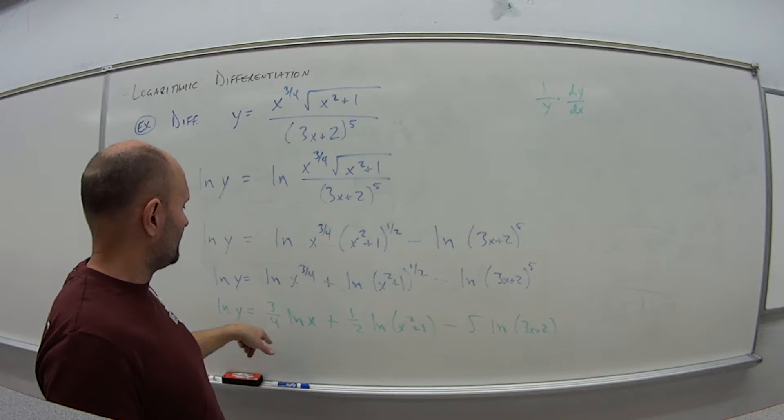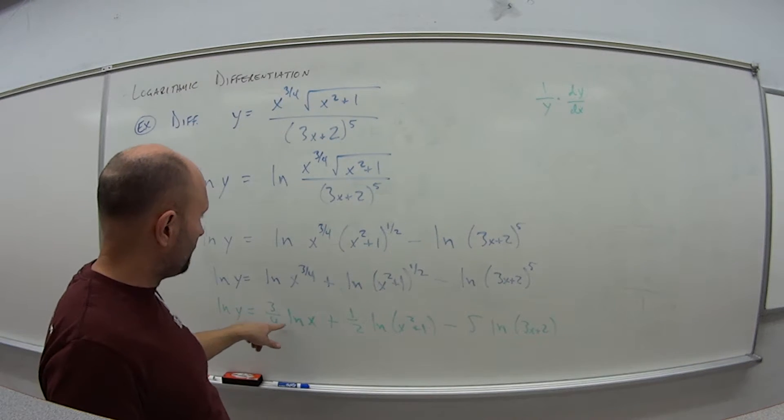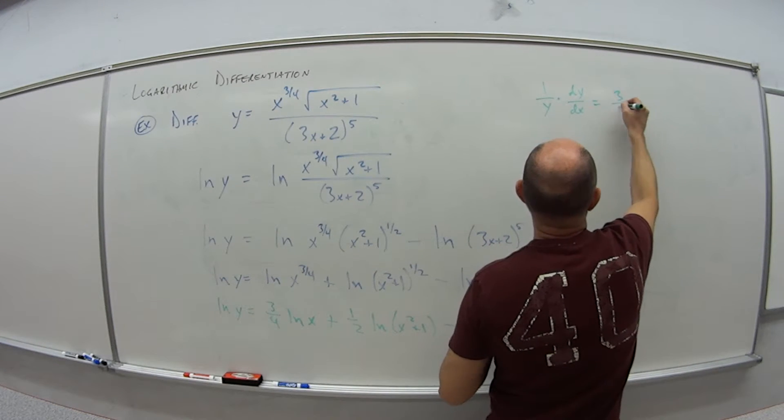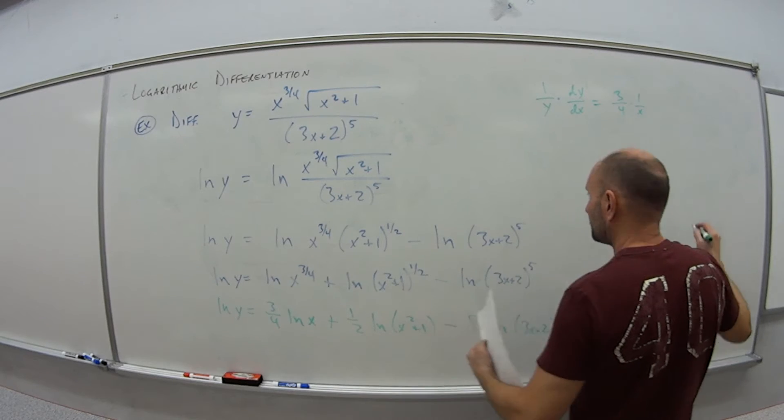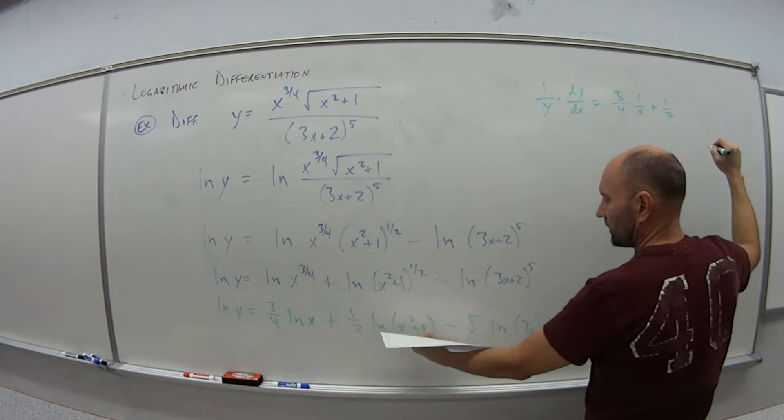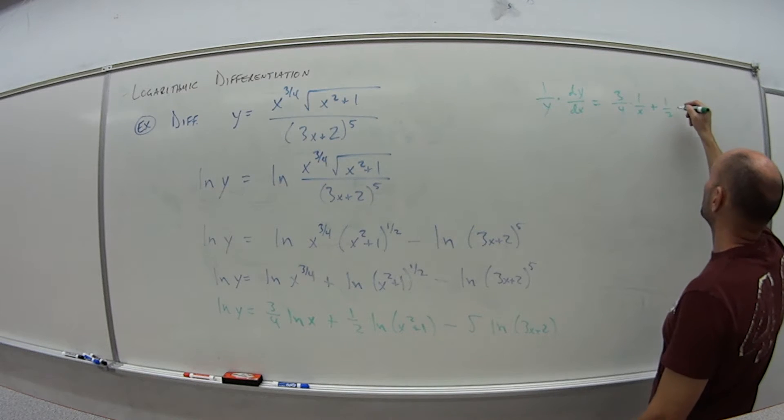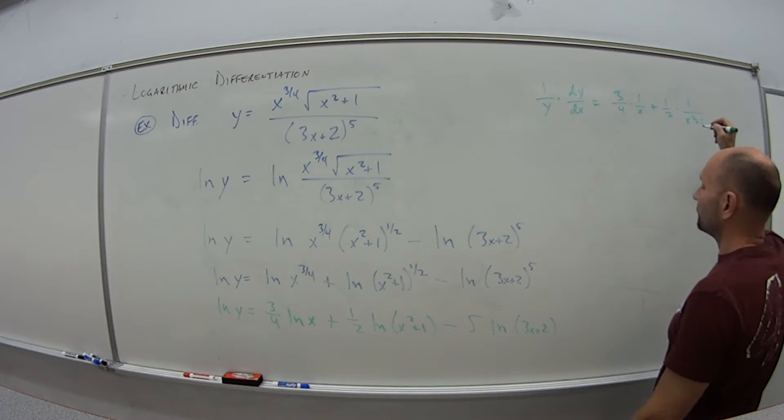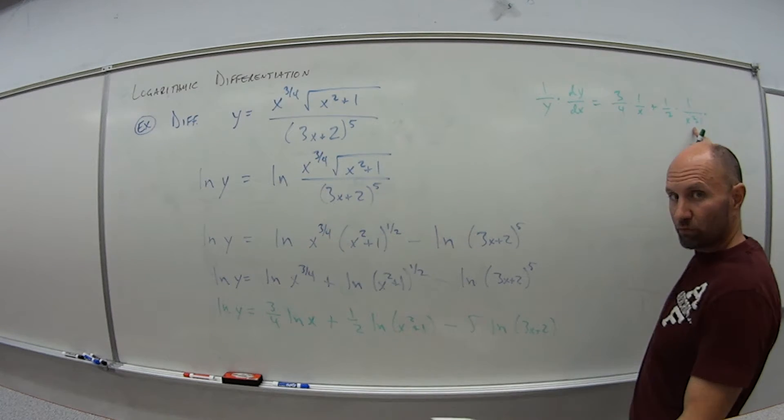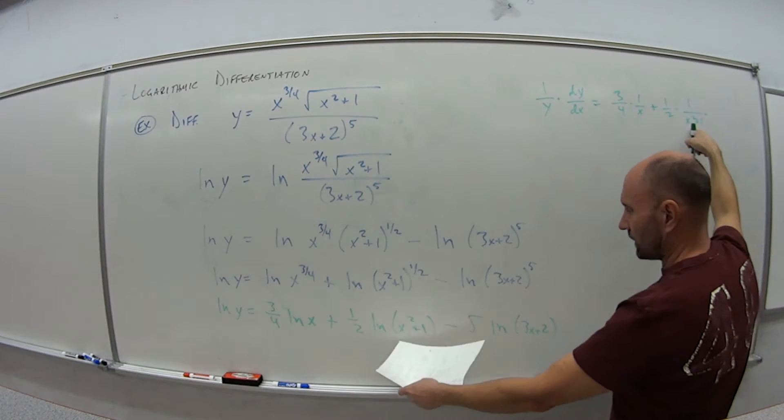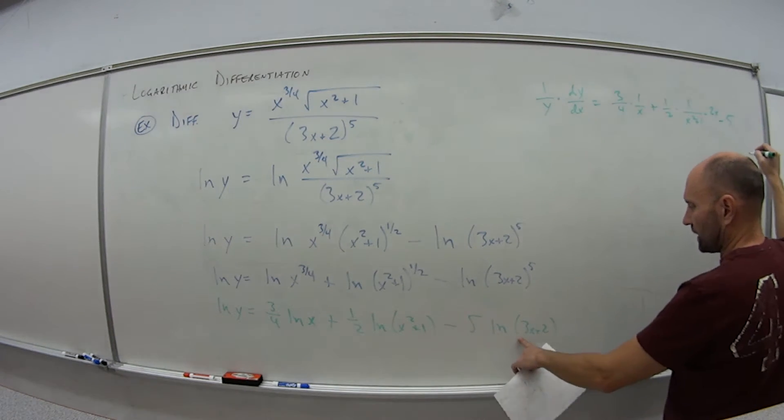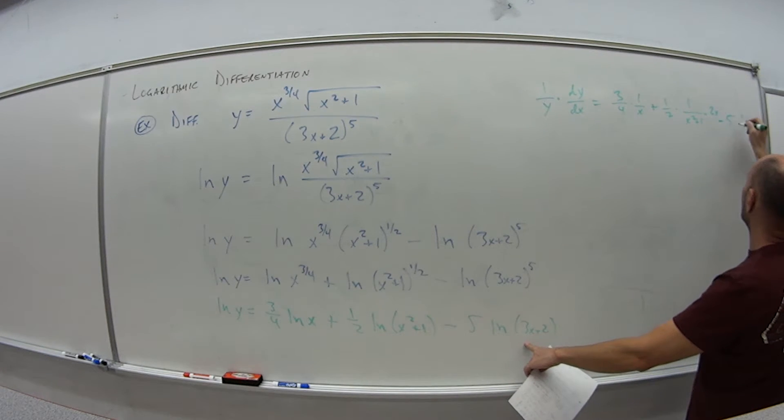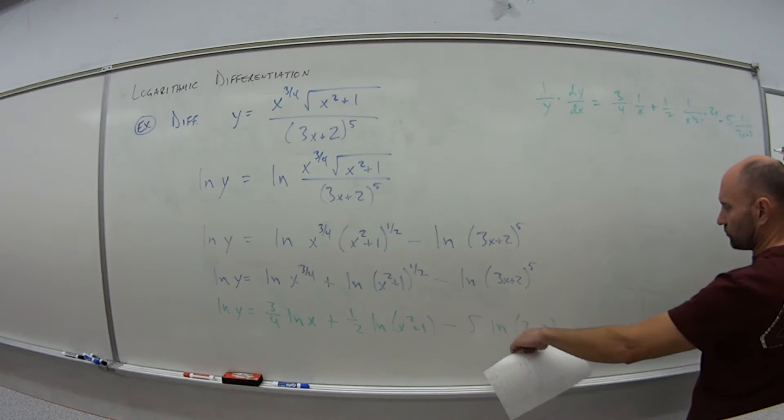And then I need to take the derivative of these pieces. So this is a product rule, but this is a constant, so this is going to be 3/4 times the derivative of natural log of x, which is 1 over x plus 1/2 times the derivative of natural log x squared plus 1. So that's 1 over x squared plus 1 times the derivative, remember the chain rule, of this guy. So that's 2x minus 5 times the natural log of this. So the derivative of that is 1 over 3x plus 2 times the derivative of this, the chain rule, which is 3.